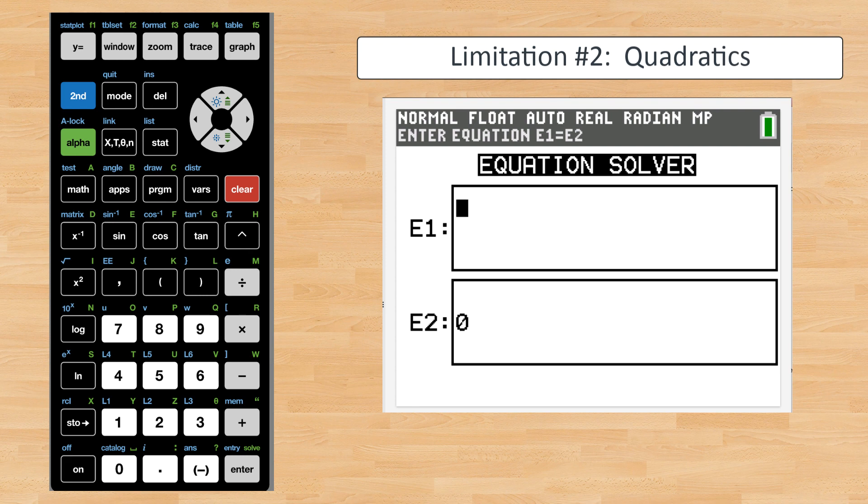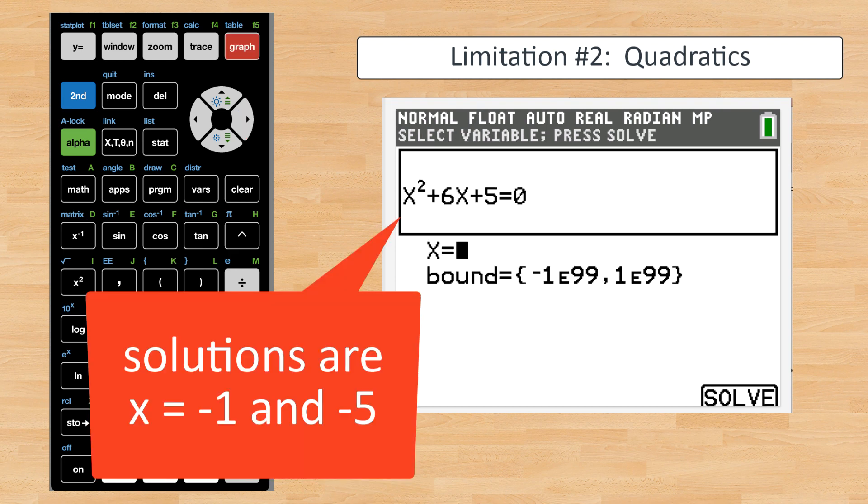Limitation number two: quadratics. One of the first things eager students try is to solve those darn quadratic equations with the numeric solver. It sucks for this. I'm sorry, but it does. Let me show you. Let's take x squared plus 6x plus 5 equals 0. Spoiler alert, I'm showing you the solutions here and now so you can see what happens.